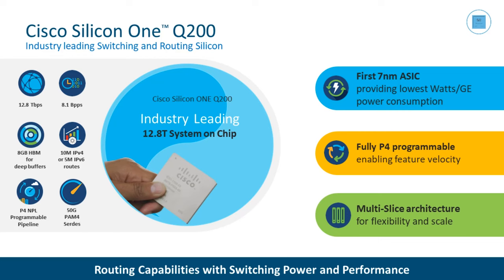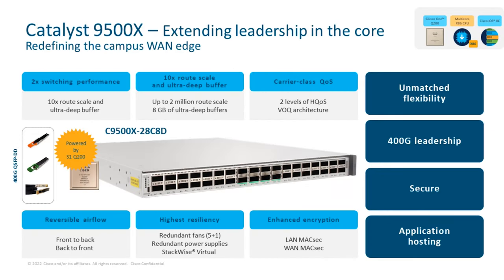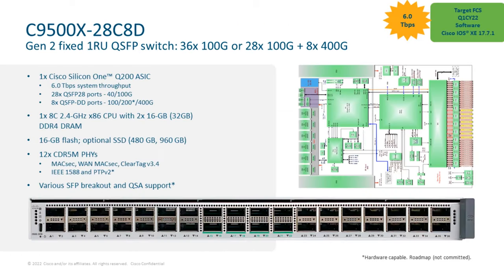Here is the X-factor: the 9500 X delivers 2 times the switching performance of the 9500 High Performance, which is 10 times the routing scale, 8 gigabytes of deep buffers, and hierarchical queues with a virtual output queue forwarding model.